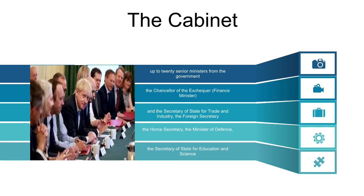The cabinet is normally composed of up to 20 senior ministers from the government, who are chosen and presided over by the Prime Minister. Examples are the Chancellor of the Exchequer, Finance Minister, the Foreign Secretary, the Home Secretary, the Minister of Defence, the Secretary of State for Education and Science, and the Secretary of State for Trade and Industry. The cabinet structure originated historically in meetings that the monarch had with leading ministers in a small royal cabinet, outside the framework of the Privy Council. As the monarch gradually ceased to play a part in active politics, the royal cabinet developed more authority and independence and became a parliamentary body.